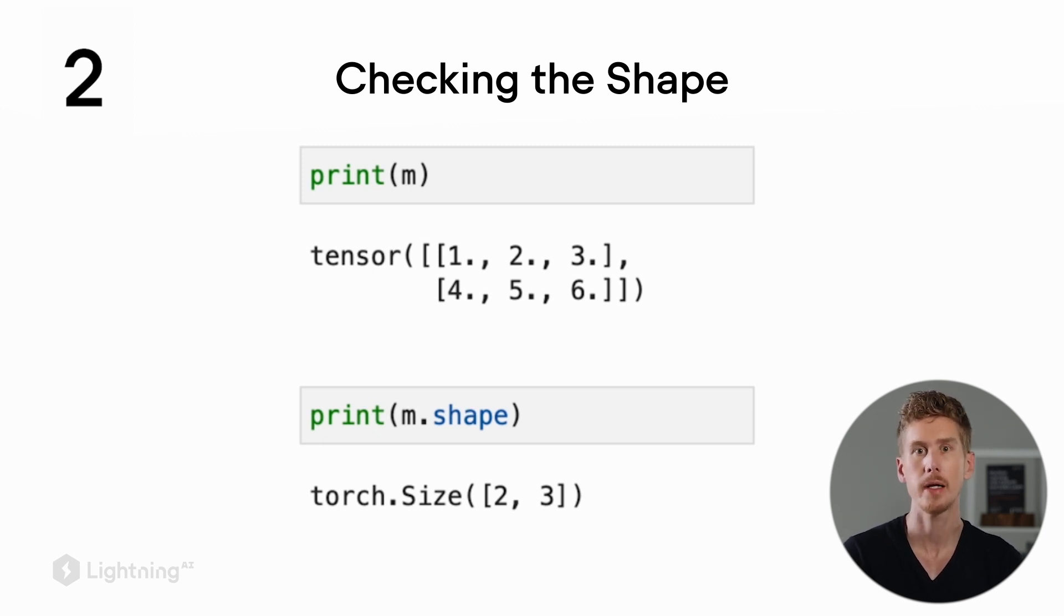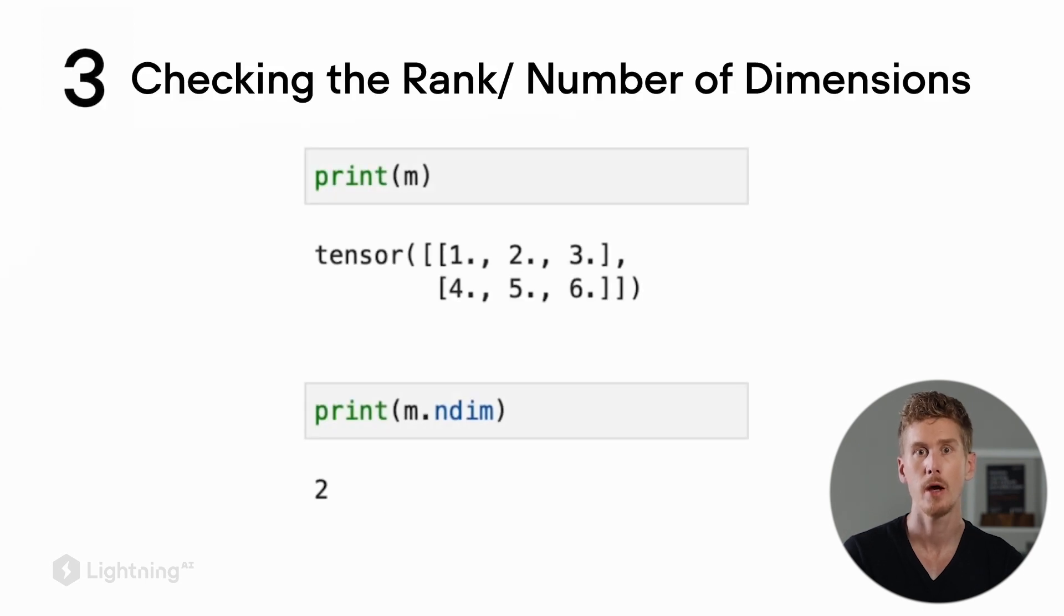If we want to conveniently check the number of dimensions or the rank, we can use .ndim, which returns the number of dimensions or rank of the tensor directly.